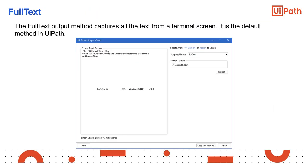The FullText output method is the default output method in UiPath. It is fast, accurate, and can work in the background. It can capture all the text from the terminal screen, including hidden text. However, it does not work on Citrix and other virtual environments, and it does not retain formatting and text precision.